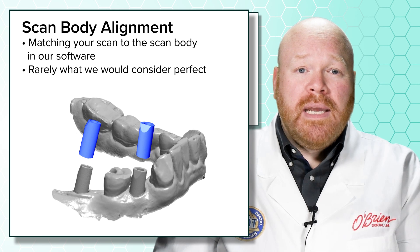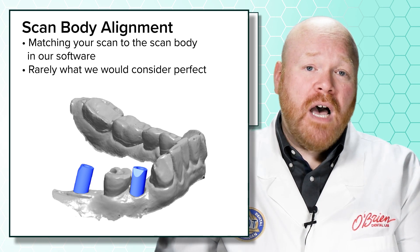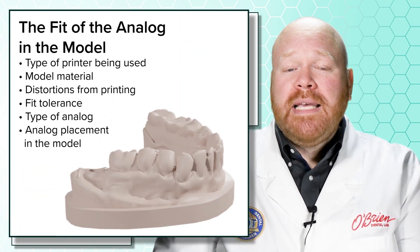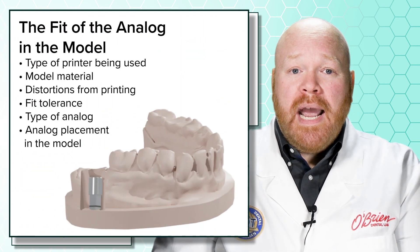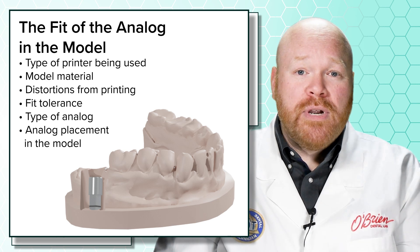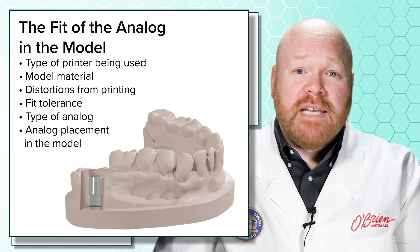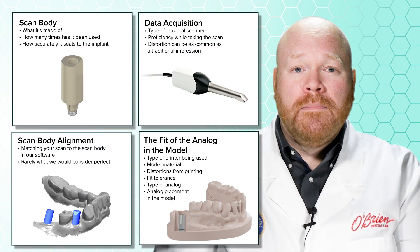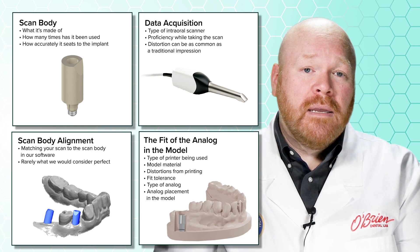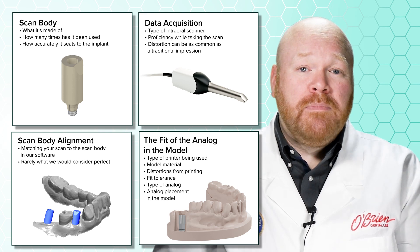Distortion can be just as common with an intraoral scan as with a traditional impression. Third is the scan body alignment, where we match up your scan of the scan body to a library version in our software — the result of that alignment is rarely what we would consider perfect. And finally is the fit of the analog in the model, which is affected by the type of printer being used, the model material, distortions from printing, fit tolerances where the analog gets seated, the type of analog, and how carefully the analog is placed. Any of these things individually can affect the positional accuracy of the abutment and crown, and since all of those steps are necessary, any discrepancy in one is compounded by another.